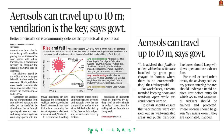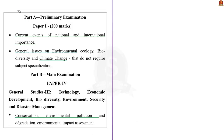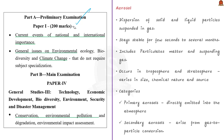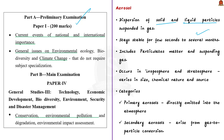The next discussion is based on a news article about the role of ventilation in diluting aerosols emitted by COVID-infected patients. An aerosol can be defined as a dispersion of solid and liquid particles suspended in gas. Aerosols tend to stay stable for a period of a few seconds to even several months. The term aerosol includes particulate matter and the suspending gas. Aerosols occur in both the troposphere and the stratosphere, with considerable differences in size, chemical nature, and sources between these two atmospheric layers.